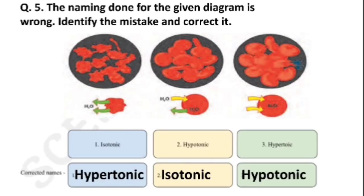Question number 5: The naming done for the given diagram is wrong. Identify the mistake and correct it. The diagram was given the names isotonic, hypotonic and hypertonic. The correct answer is hypertonic, isotonic and hypotonic. You should draw this diagram and write it properly.